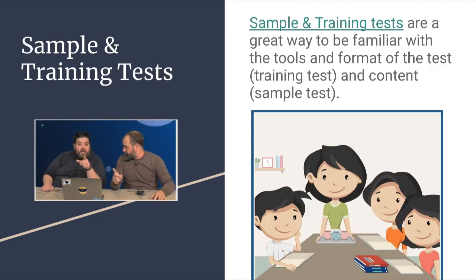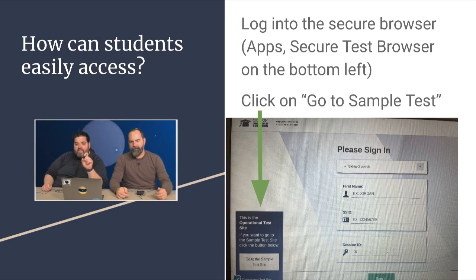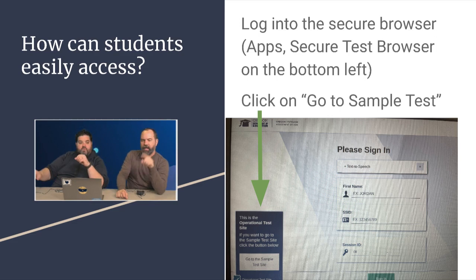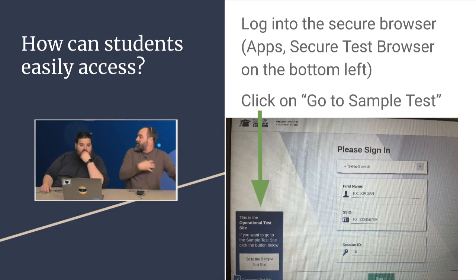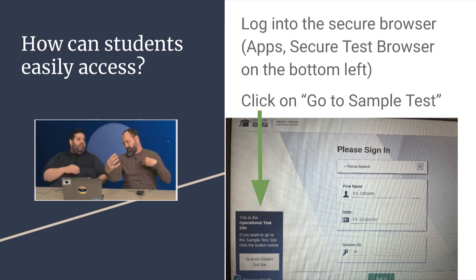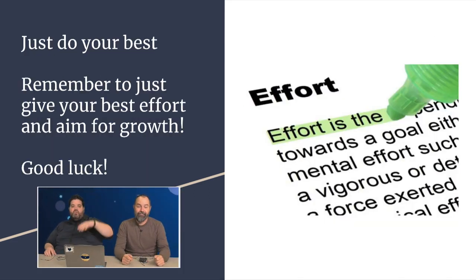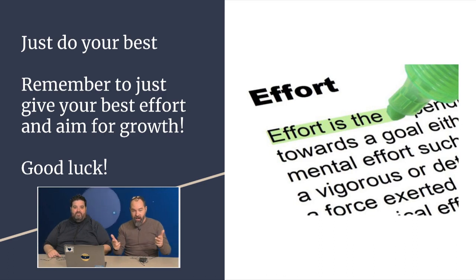Teachers have probably already gone over this, but students should know there are sample and training tests available. On your Chromebook, click the browser at the bottom and it'll give you an option to do the sample test. Eighth graders will be doing sample testing in language arts and math class. The trajectory should be growth — it should be upward. Do your best. Good luck — you're smart kids. It's test time. You're great. Do it.